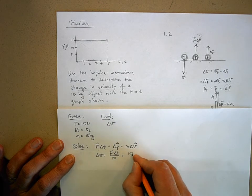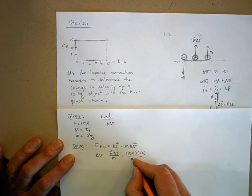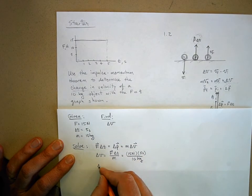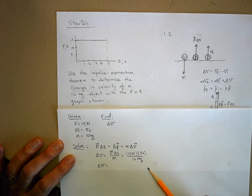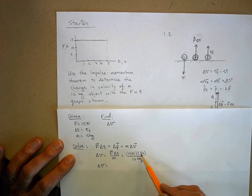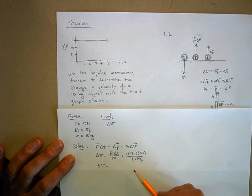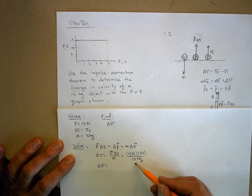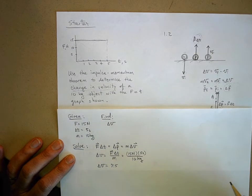And so this is 15 newtons of force applied for 5 seconds to an object that has 10 kilograms of mass. And thus, the object will change its velocity by, well, what is 15 times 5? If you're getting out your calculator right now, please smack yourself in the head and think! What's 5 times 5? 25. What's 5 times 10? 50. What's 50 plus 25? 75. What's 75 divided by 10? 7.5.